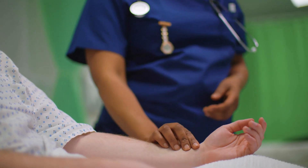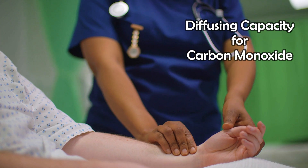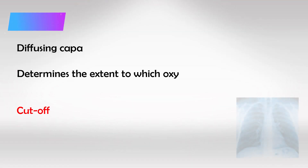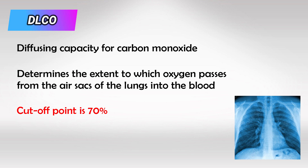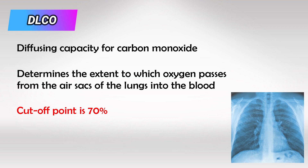Welcome back. In this video we'll talk about one of the most important topics for the USMLE: the diffusion lung carbon monoxide, or DLCO. This basically tells you the diagnosis far more accurately than the history. DLCO refers to how much carbon monoxide is diffused through the lung — in other words, how much gas in the air gets into the blood.